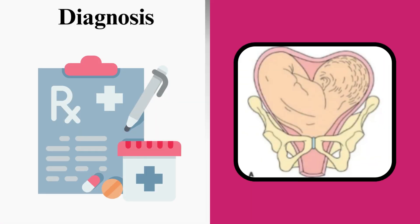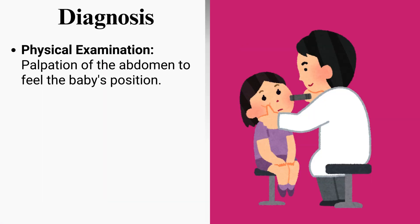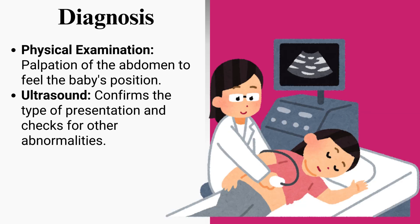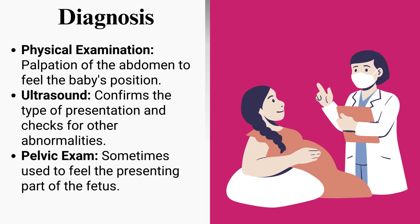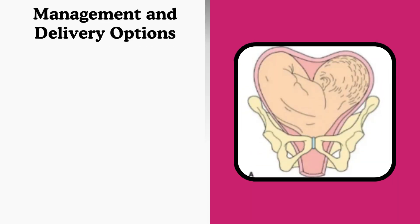Prematurity is another risk factor, as shoulder presentation is more common in premature babies who have more space to move. Diagnosis involves physical examination with palpation of the abdomen to feel the baby's position, ultrasound to confirm the type of presentation and check for other abnormalities, and a pelvic exam sometimes used to feel the presenting part of the fetus.